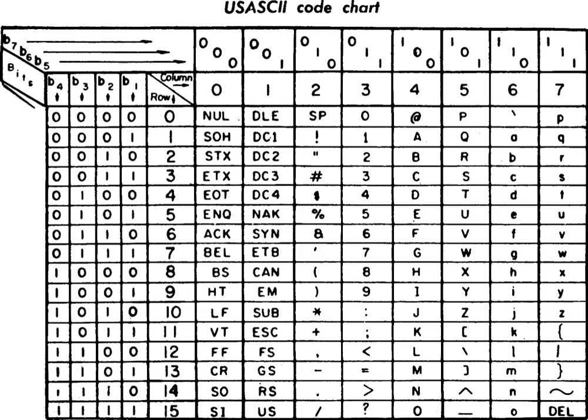ASCII reserves the first 32 codes for control characters — codes originally intended not to represent printable information, but rather to control devices that make use of ASCII, or to provide meta-information about data streams such as those stored on magnetic tape. For example, character 10 represents the function which causes a printer to advance its paper, and character 8 represents backspace. RFC 2822 refers to control characters that do not include carriage return, line feed, or white space as non-whitespace control characters. ASCII does not define any mechanism for describing the structure or appearance of text within a document; other schemes, such as markup languages, address page and document layout and formatting.